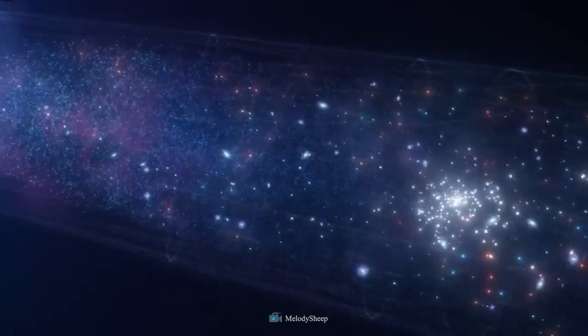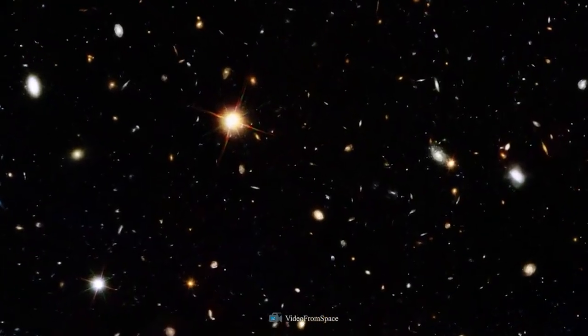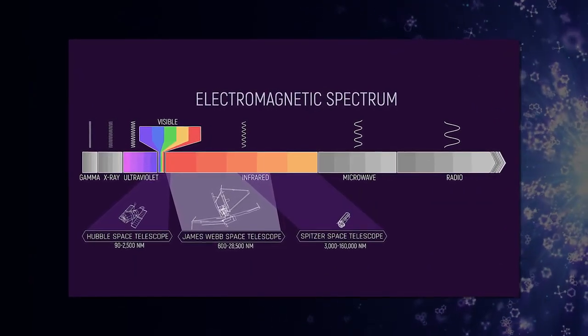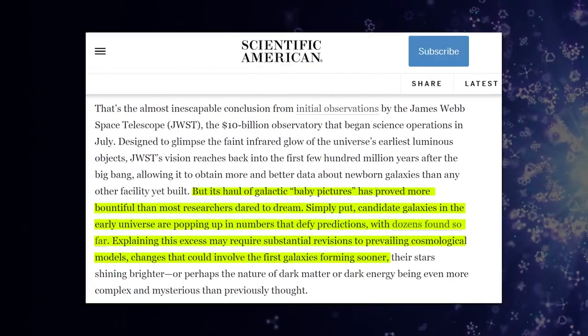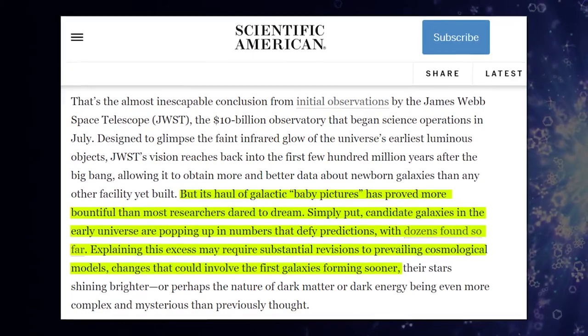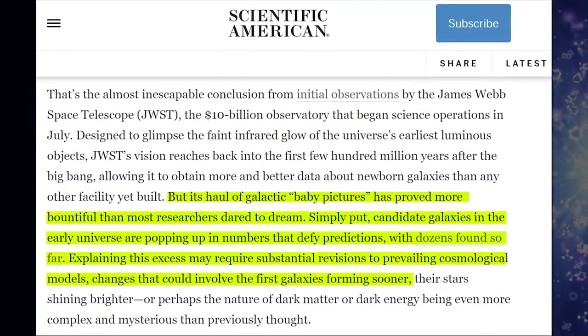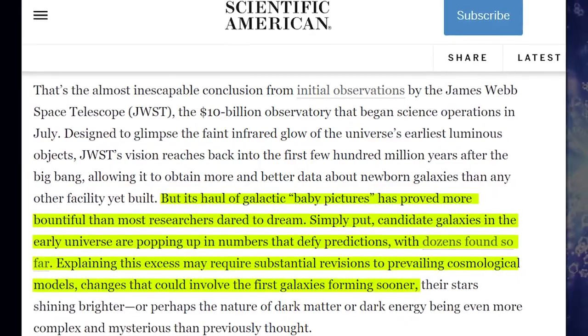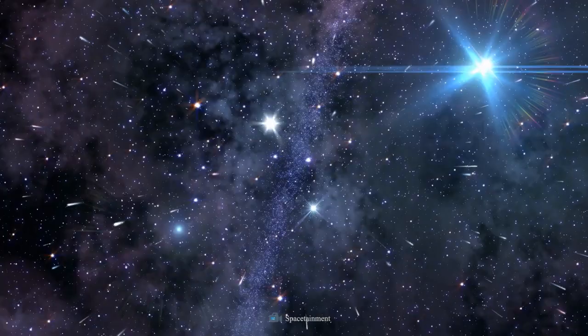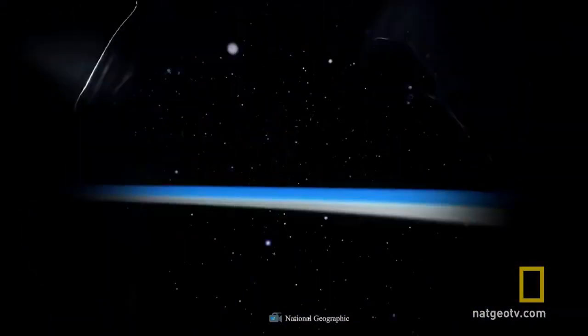JWST's vision reaches back into the first few hundred million years after the Big Bang, allowing it to obtain more and better data about newborn galaxies than any other facility to date. This is because JWST was designed to glimpse the faint infrared glow of the universe's earliest luminous objects. However, the bounty of intergalactic baby pictures that has yielded has exceeded the wildest expectations of scientists. In a nutshell, the discovery of dozens of candidate galaxies in the early universe defies expectations. To account for the success, current cosmological models may need to undergo significant changes.